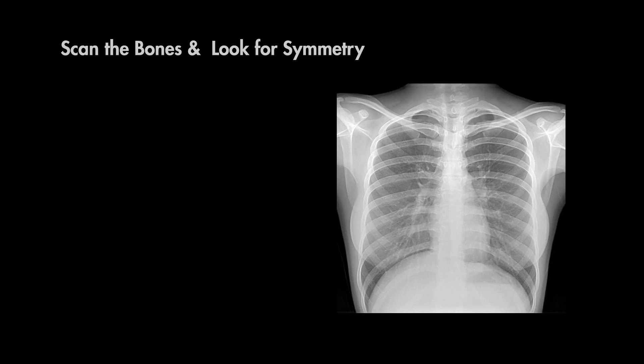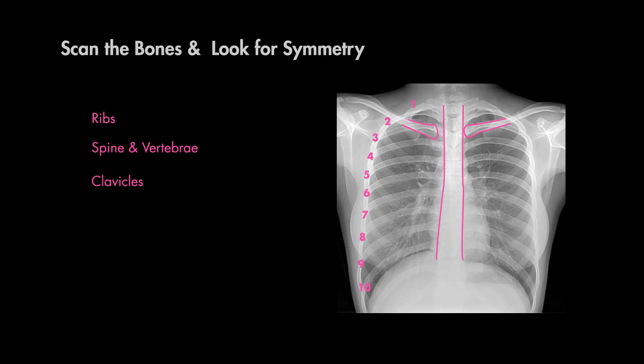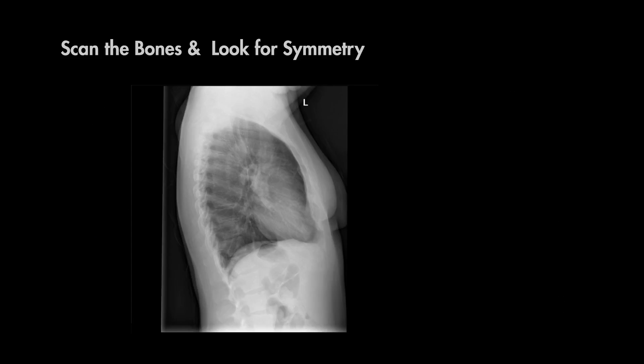First, scan the bones and look for symmetry. You'll see ribs, the spine and vertebrae, clavicle, and both scapula and humerus. On a lateral film, you'll also be able to see the sternum in addition to lateral views of your ribs, scapula, and vertebrae.